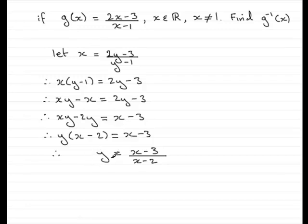All I need to do now is just replace the y with g to the minus 1 of x. So therefore we've got the inverse function of g, g to the minus 1 of x equals x minus 3 all over x minus 2. And if we're asked to state the domain of this, the domain would be any real number except 2 because that would make the denominator 0. So x cannot equal 2.